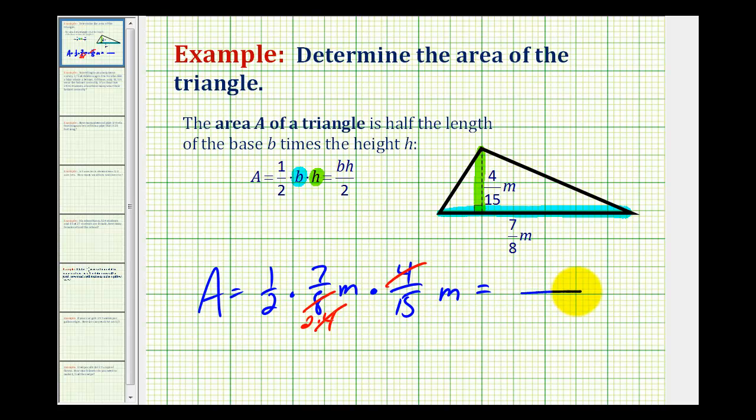Now we'll multiply. Multiplying across the numerator, we're going to have 1 times 7 times 1. That's 7. Our denominator is 2 times 2 times 15, which is going to be 60.